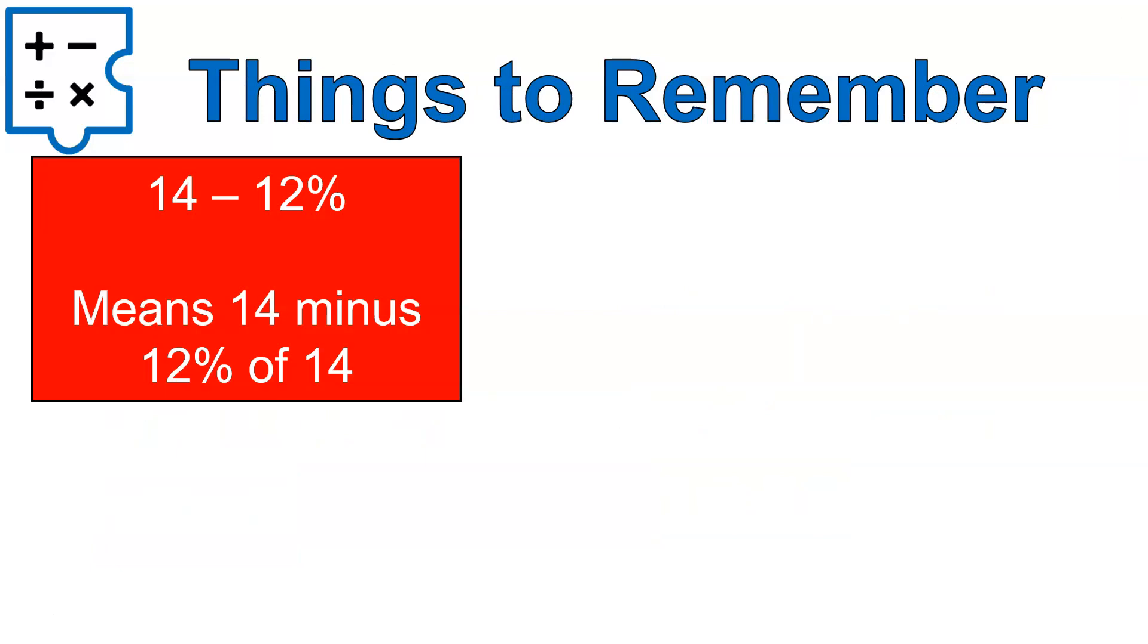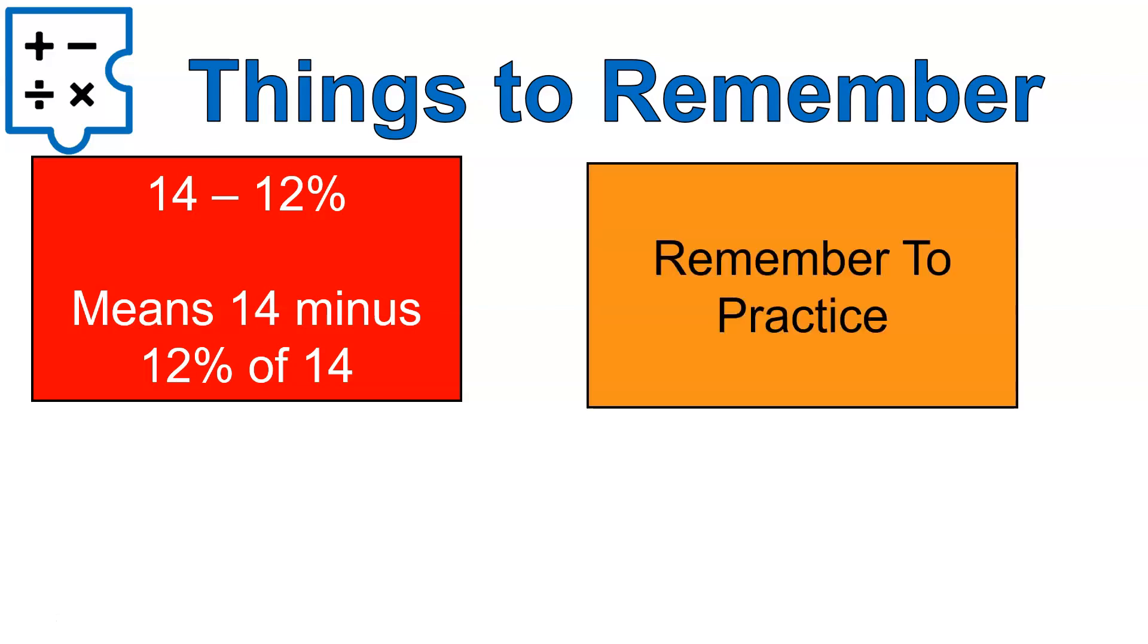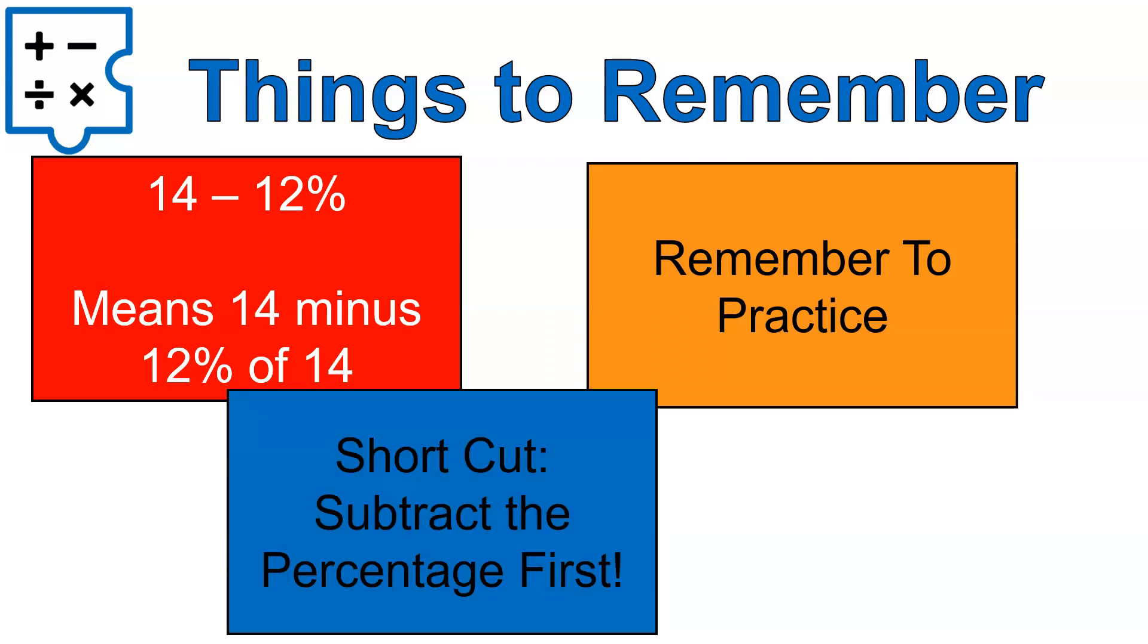There you go. That is your final questions. A couple things to remember. 14 minus 12% means 14 minus 12% of 14. That's the most common place people get confused or make mistakes on this. The next thing is to remember to practice. I would practice using that first method several times before jumping into our shortcut. But the shortcut will always work. It's just good to know what it actually means and what it's doing. So, use the shortcut of subtracting or adding the percentages first. I hope that was helpful for you and as always, have a wonderful day.